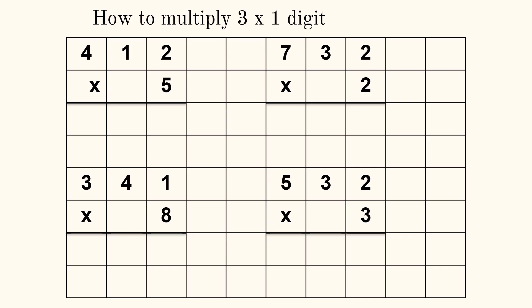So how about if I have a 3 by 1? Again, it doesn't change the process. We still use the same process. I start with 5 times 2, which gives me 10, and then 5 times 1, which is 5, plus that one gives me 6, and then 5 times 4 gives me 20, so 2060.